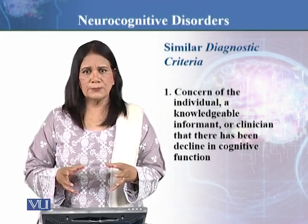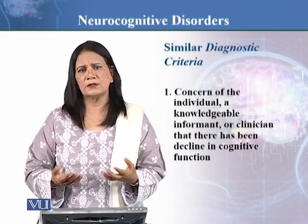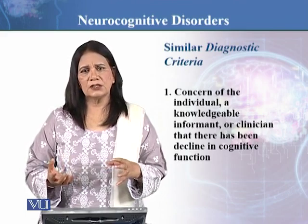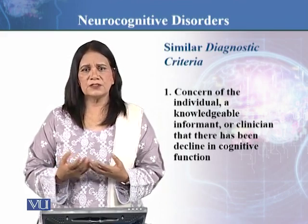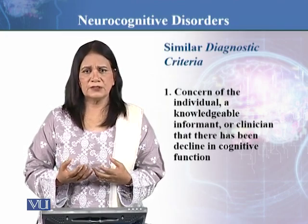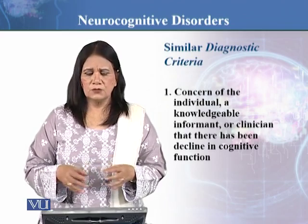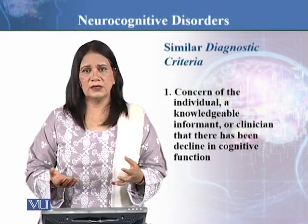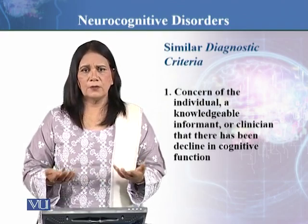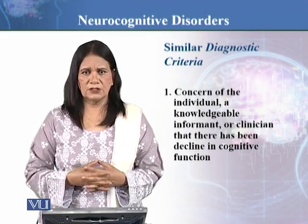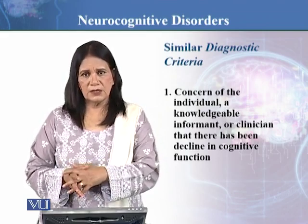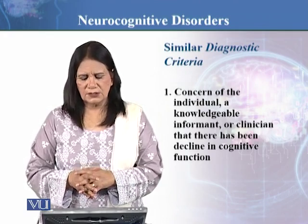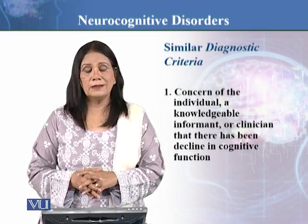Language, perception, and social cognition get affected. When this is a severe condition, the person becomes completely dependent because they are unable to manage on their own. For example, many times people forget whether they have eaten or not, and they keep repeating things because they have forgotten they have already done them. This is why a knowledgeable informant or clinician can observe and show concern that there has been a decline in cognitive function.